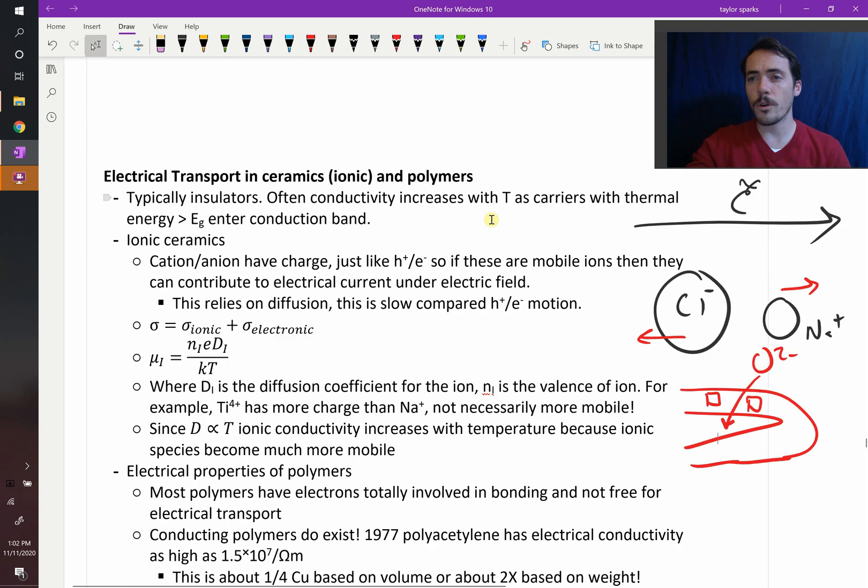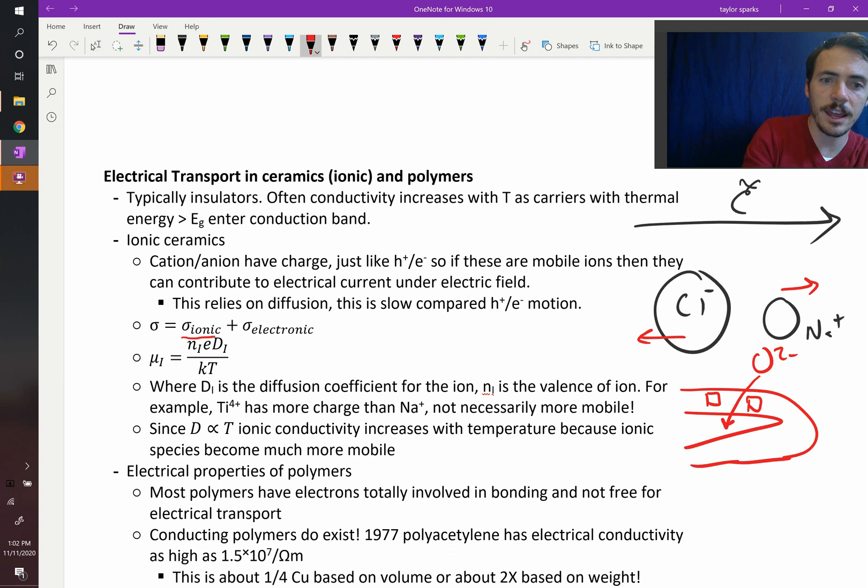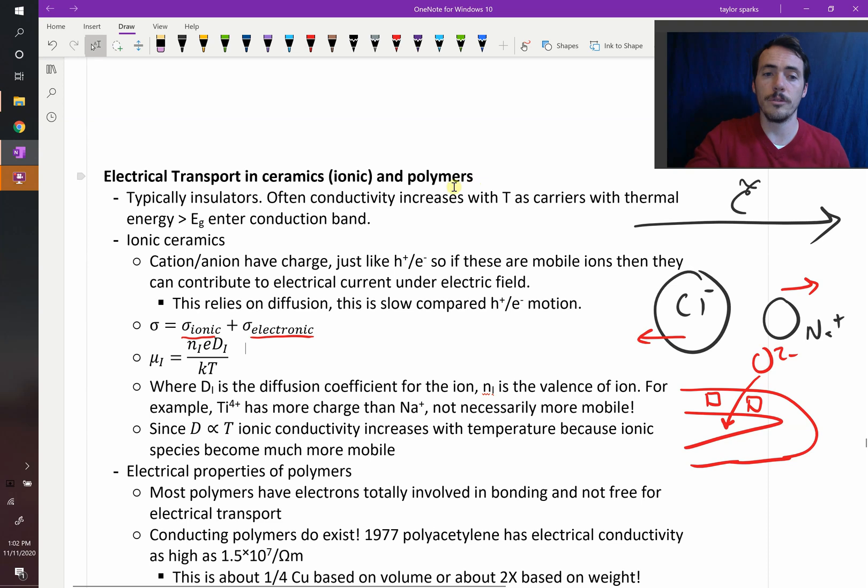So the overall electrical conductivity will account for both terms, the ionic contribution and the electronic contribution. Normally electronic is small. There do exist materials that are both electric and ionic conductors that can conduct both species, both electrons and ions.